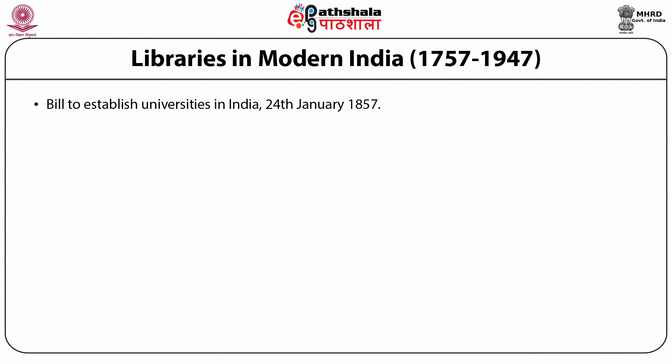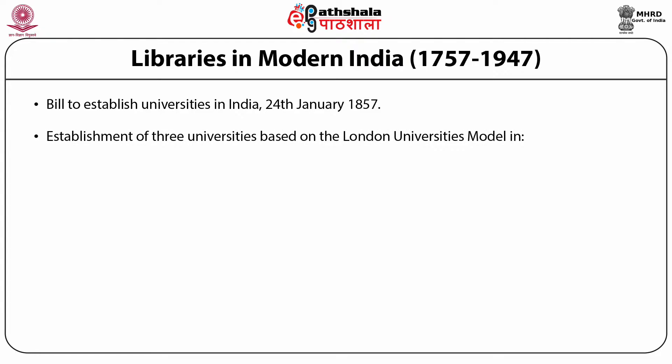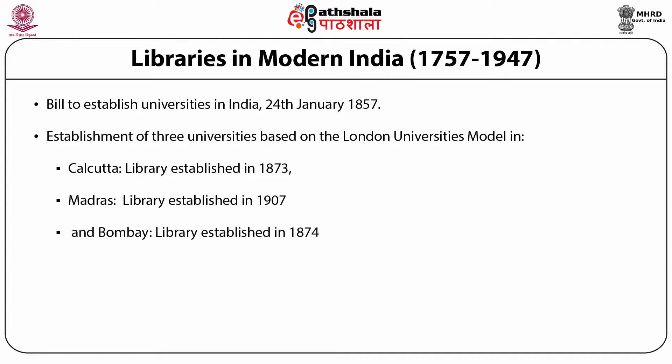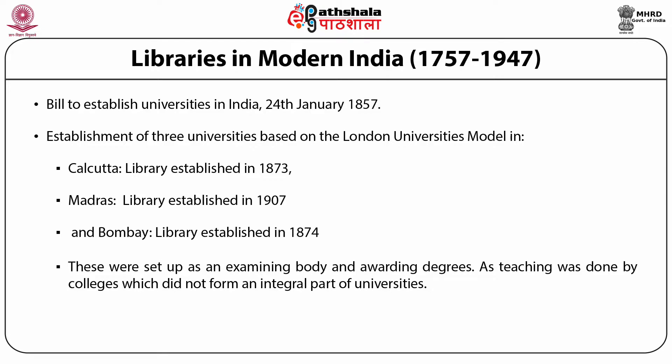A bill to establish universities in India was passed on 24th January 1857. The establishment of three universities was decided based on the London University's model, which was basically for taking examinations with no teaching conducted. The three universities established were Calcutta, Madras and Bombay. The Calcutta University got its library in 1873, Madras got its library in 1907, and Bombay University got its library in 1874. These were set up as examining bodies for awarding degrees, as teaching was done by colleges which did not form an integral part of universities.